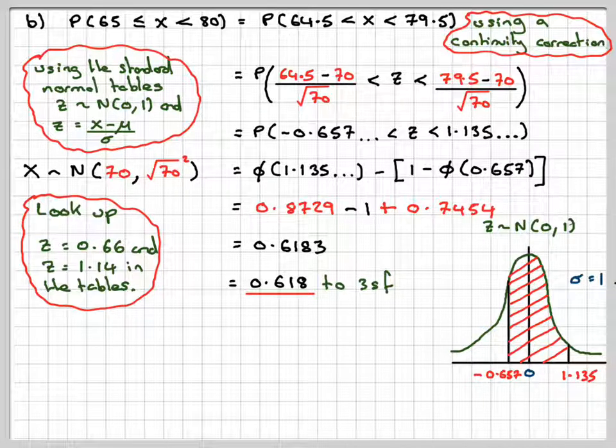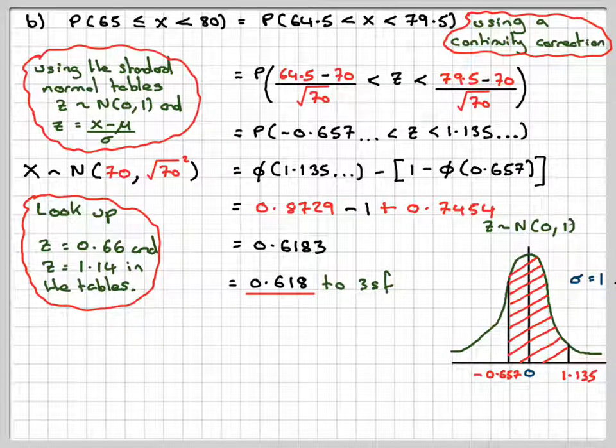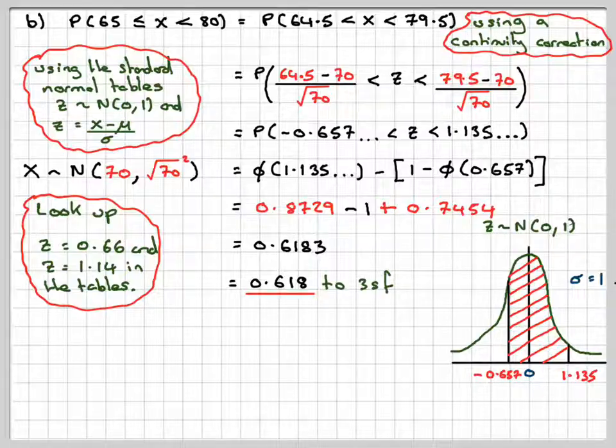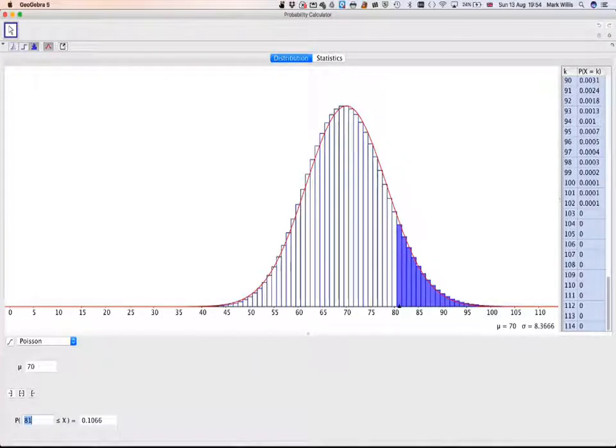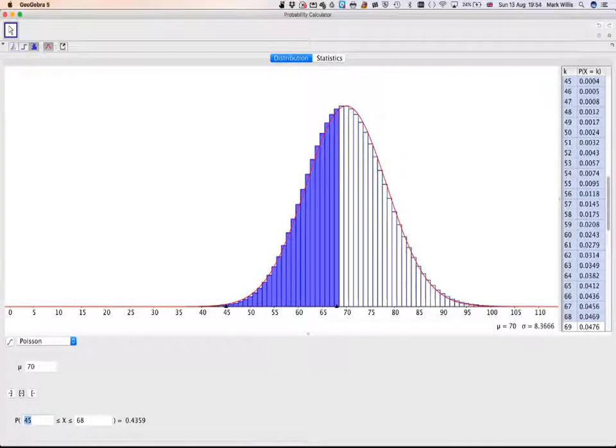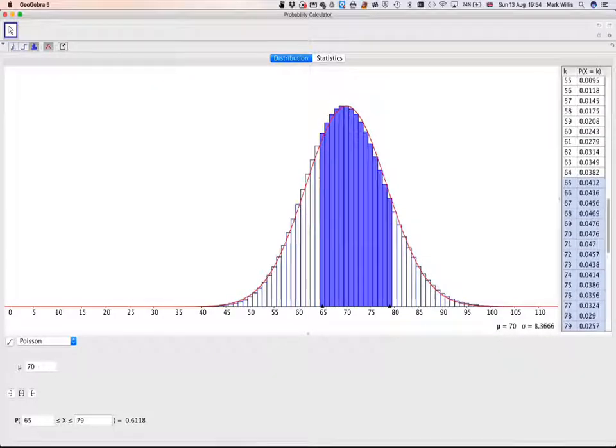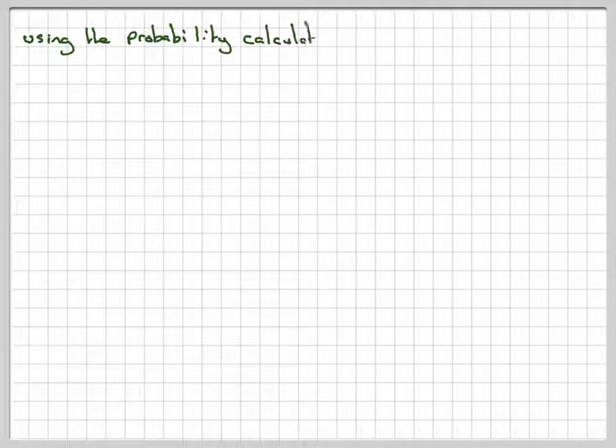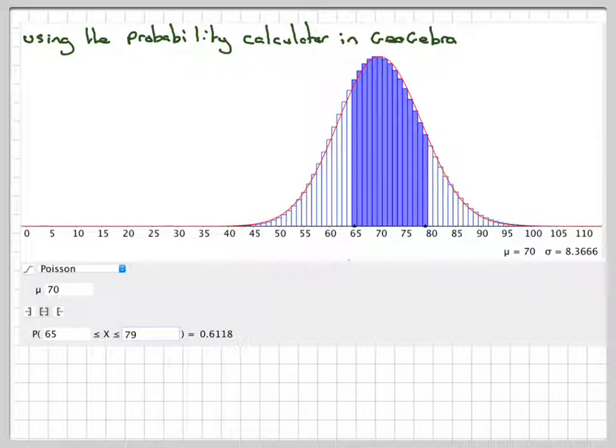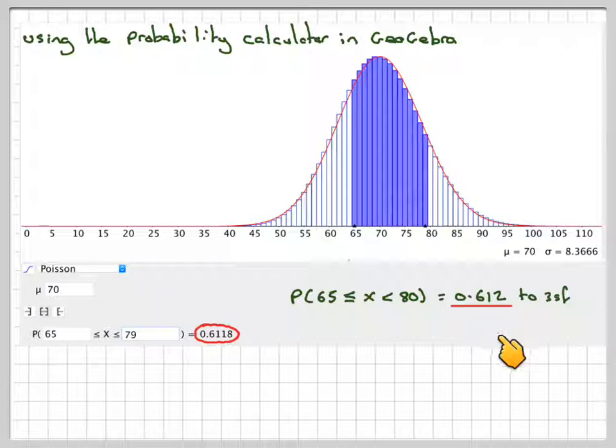If we do our GeoGebra, we'll have to set our GeoGebra to 65 and 79. So we'll do that one, and then we'll set it to 65 and 79 because we don't want to include 90. We'll get an answer of 0.612. So again, it's a reasonable approximation. Using the probability calculator in GeoGebra, we get 0.612.